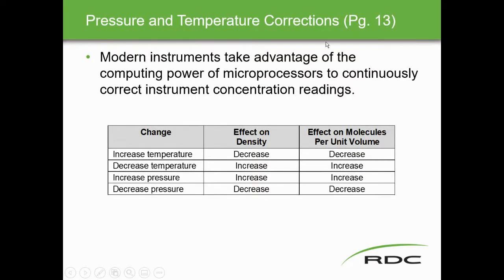Modern instruments use microprocessors to continuously correct for temperature and pressure. Increased temperature decreases gas density and the number of molecules, which affects the measurement. Temperature and pressure sensor readings are sent to the microprocessor to ensure accurate results.